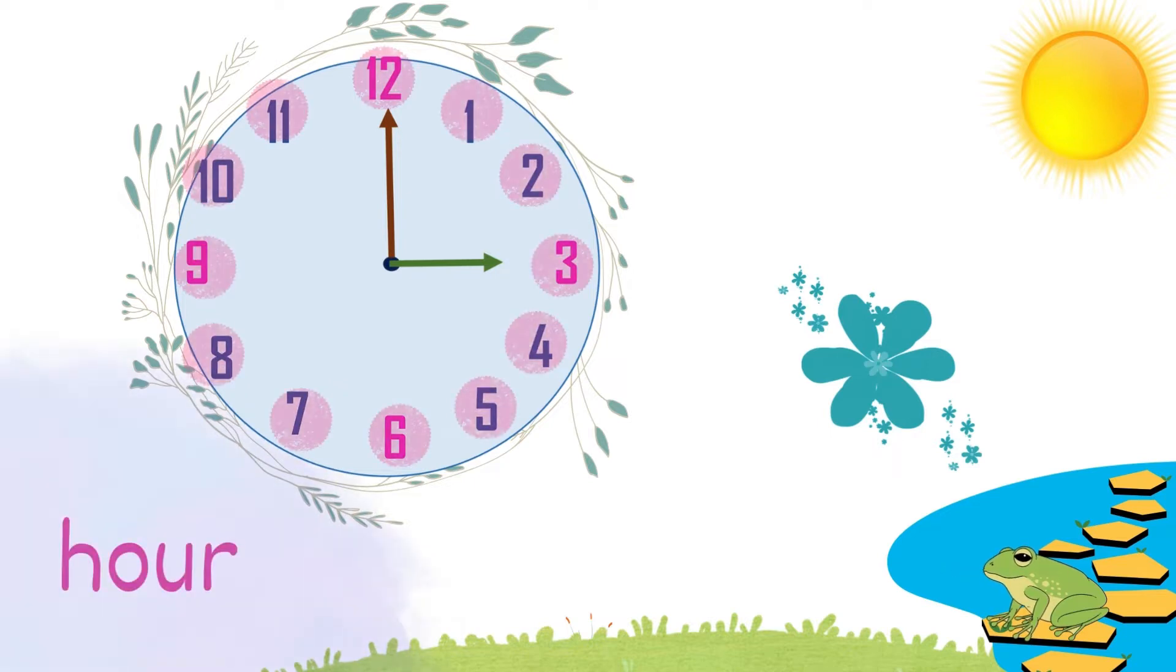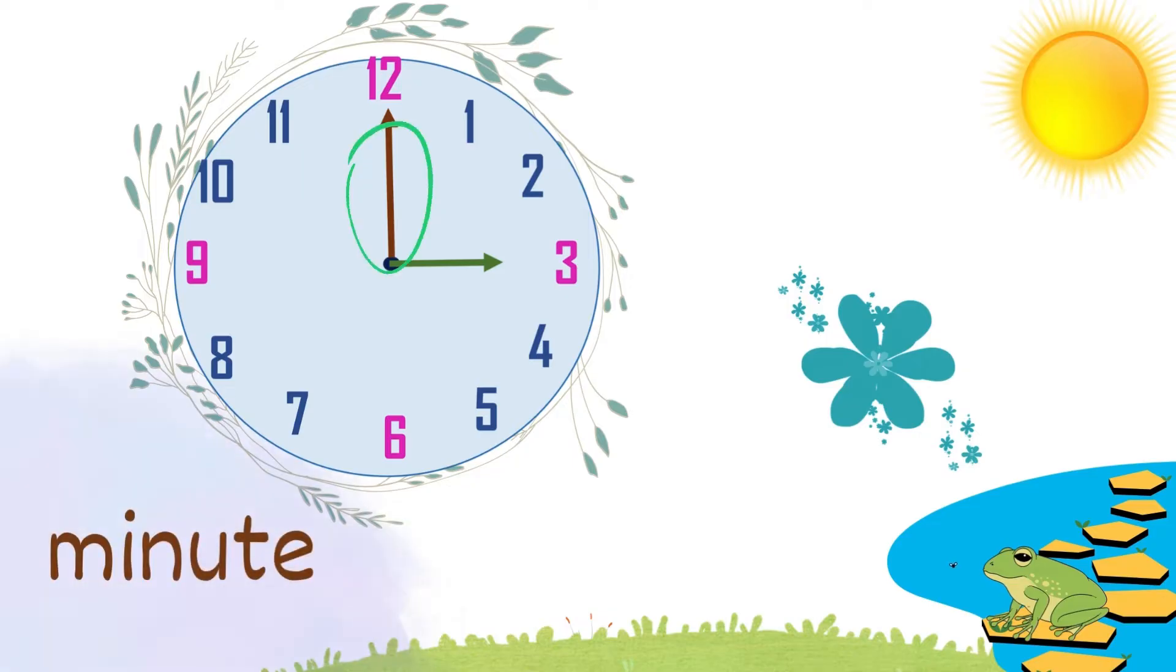And those two little hands? The shorter one is like a dancer pointing to the hour. The longer hand shows us the minutes. When the longer hand points to twelve, that's the special moment. We say it's o'clock. So, it's three o'clock.